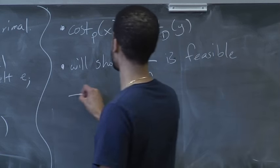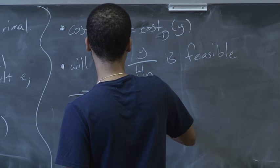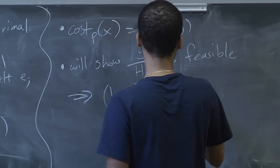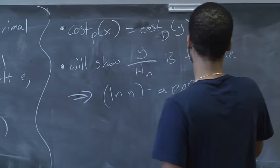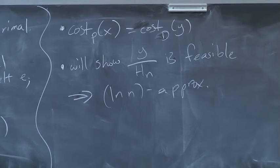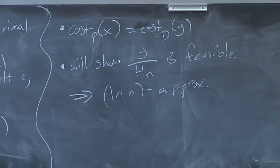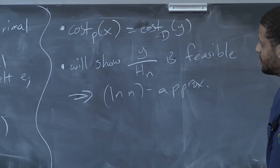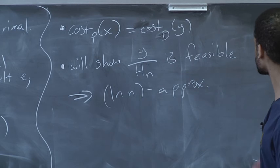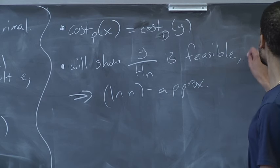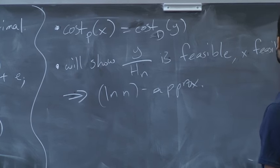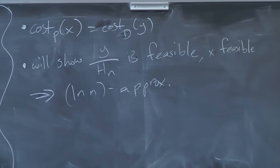First observation: the cost in the primal of X is the cost in the dual of Y — we've rigged it that way. We'll show Y over the N-th harmonic number is feasible for the dual, and that's going to imply a log N approximation. The primal will be feasible because we keep doing that while loop as long as there's a constraint that's violated.